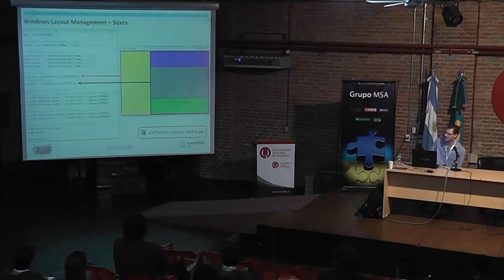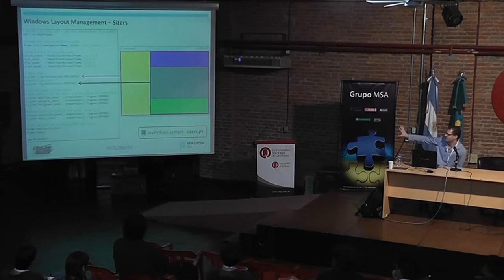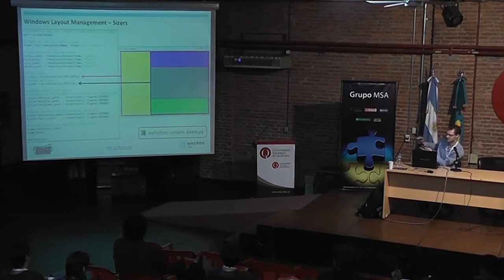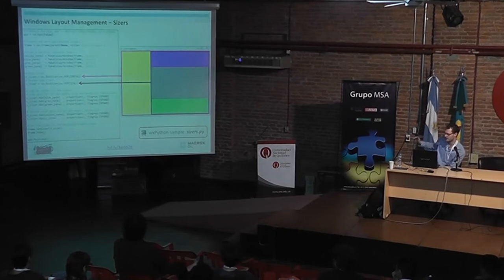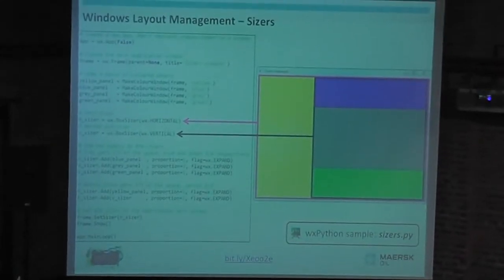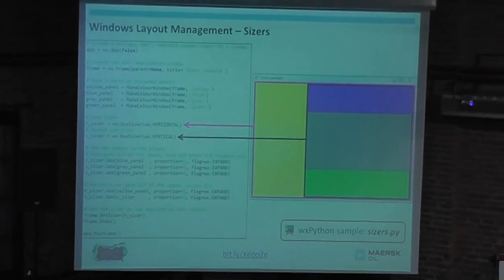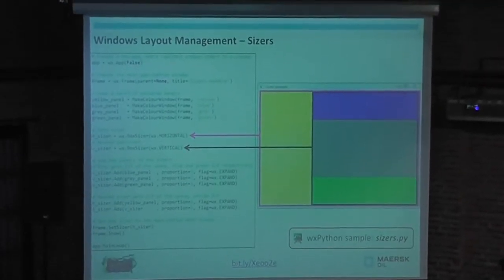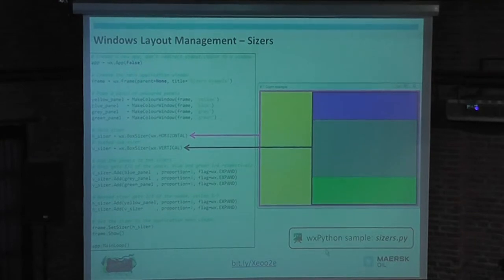Here is an example. There's a window with four colored panels: yellow on the left, then blue, gray, and green. There's a horizontal sizer laying out the yellow panel and a stack of three other panels. Inside the horizontal sizer, a vertical sizer lays out the blue, gray, and green panels vertically. The size and position of these colored panels adjust automatically when you resize the main window. A sample is available to download and play with.